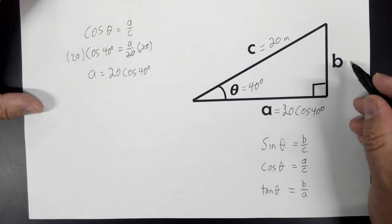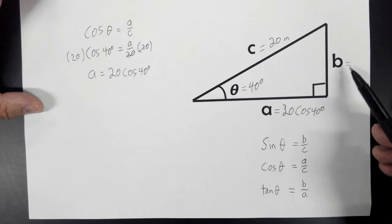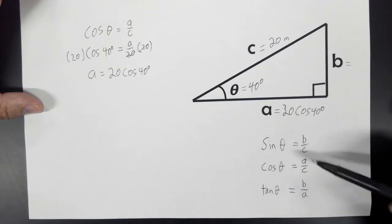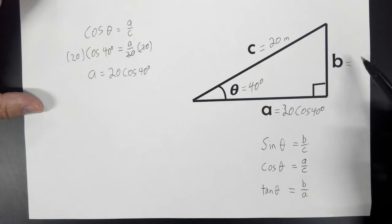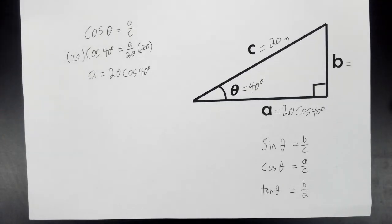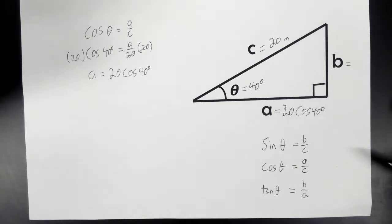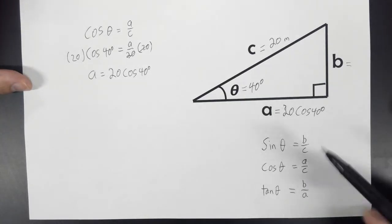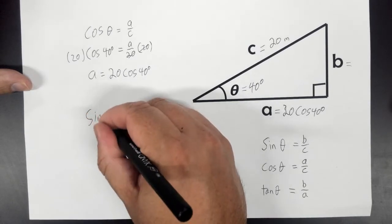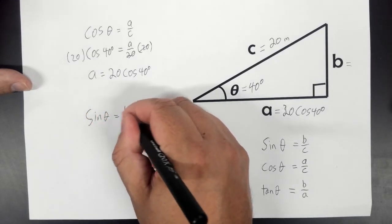To solve for B, we're going to do the same thing. This time we need one that has B, which we don't know, and C, which we do know. B and C would be this one right here, sine. So sine theta equals B over C.